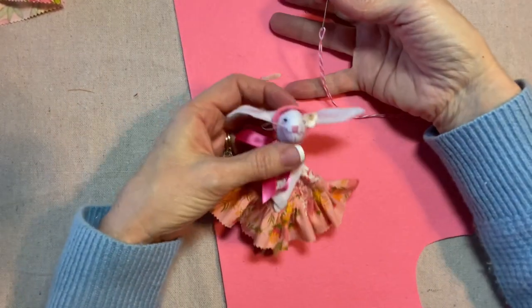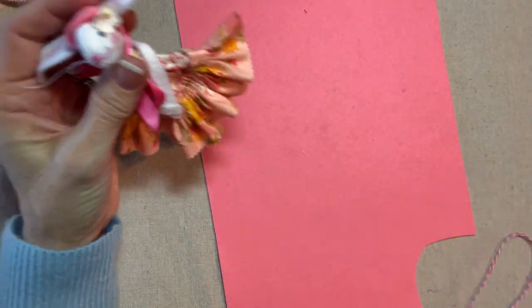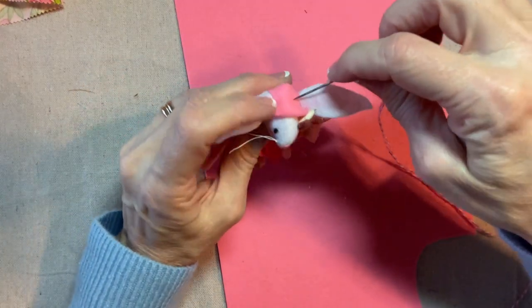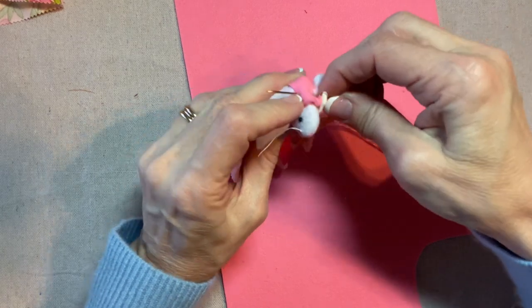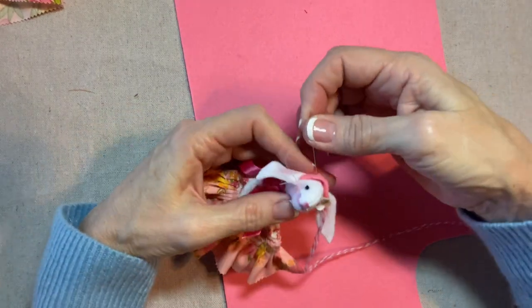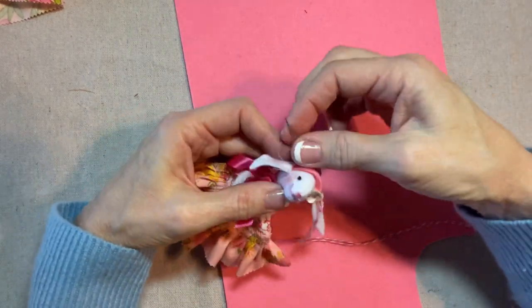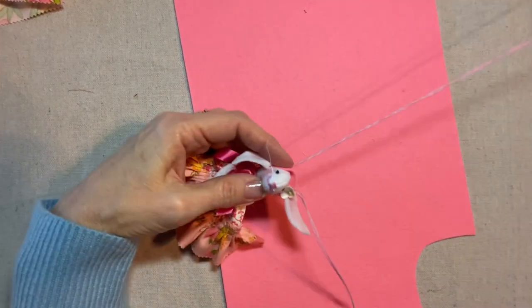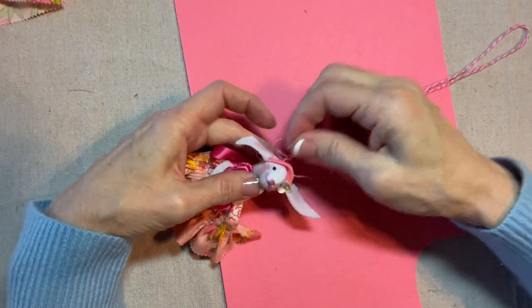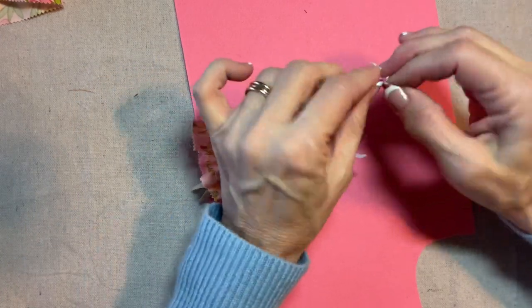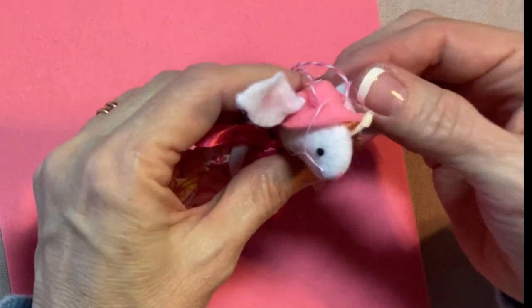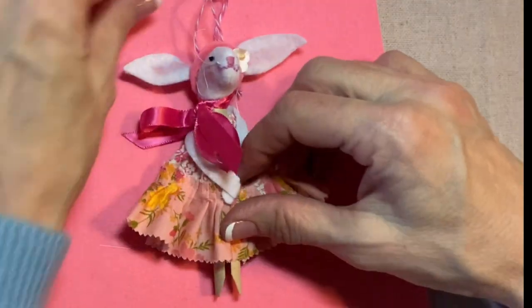I have my pink baker's twine threaded onto a nice big needle. It has to be big to accommodate the twine. And I'm sewing through the head, not just through the hat, but actually through the head. And there we go. I'll tie a little overhand knot. Aww. There she's so cute.